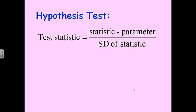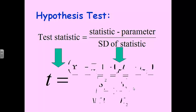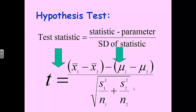For a hypothesis test, it's the same basic formula: you take your statistic, subtract your parameter, and divide by the standard deviation of the statistic. We've been seeing this over and over. The test statistic will be the t value: (x̄₁ minus x̄₂) minus (μ₁ minus μ₂), divided by the standard deviation of the statistic. Now, normally when we're doing a test statistic, we are testing to see whether there is no difference. So nine times out of ten, that μ₁ minus μ₂ part is just going to be zero.